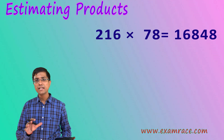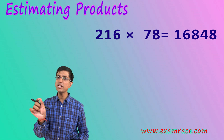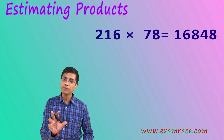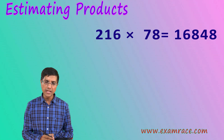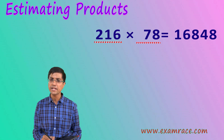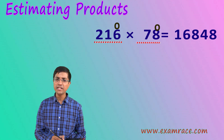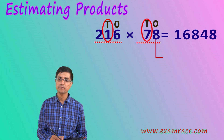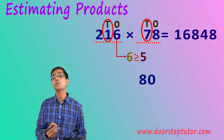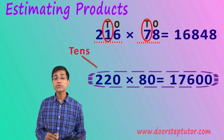Similarly, let's see what happens when we are doing products. The rule for sums is: look at the smallest number and round everything to the place value of that smallest number. For products there is a different rule. Let's take 216 multiplied by 78 — this is very complicated. First, we could round off to the nearest tens: 78 would become 80 and 216 would become 220. But this is still not simple enough.